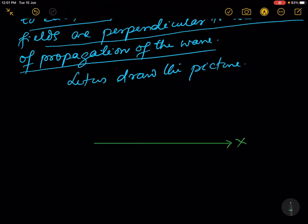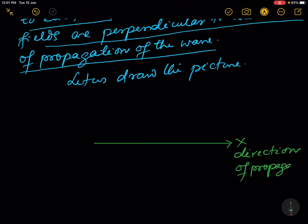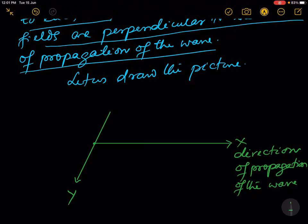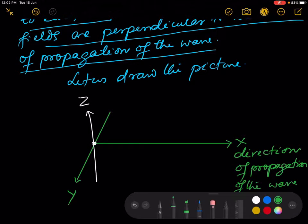Here the x-axis is the direction of propagation of the wave. This is the origin, with the y-axis and z-axis shown. Let us take the magnetic field in this plane — the oscillating magnetic field can be drawn in the form of waves.